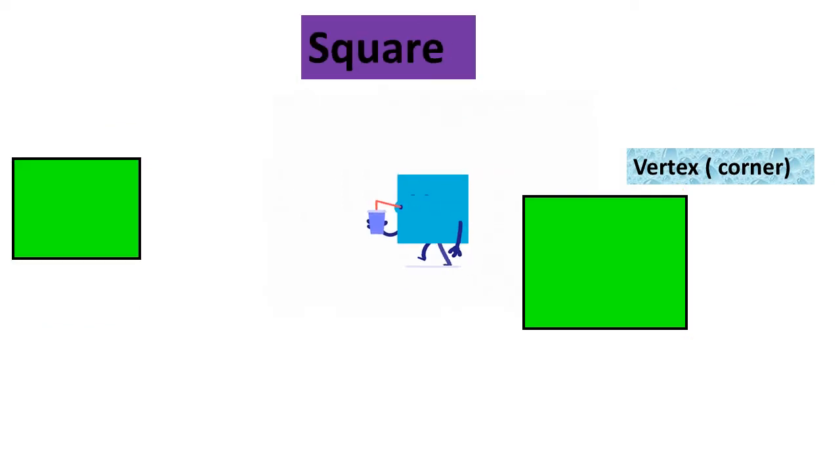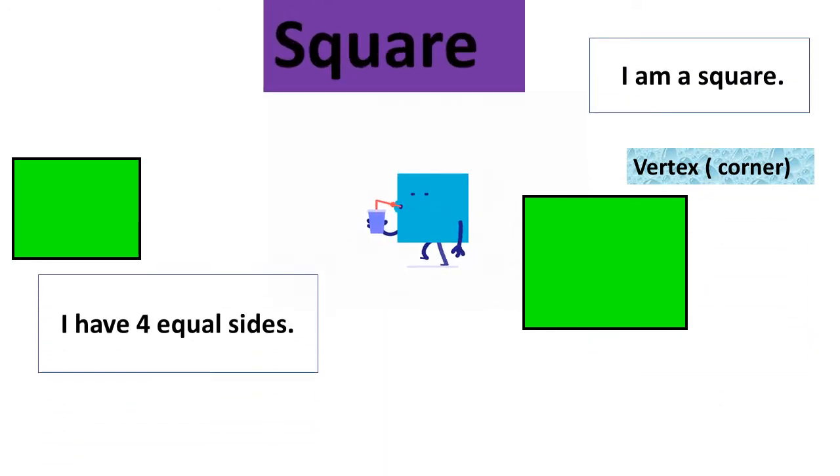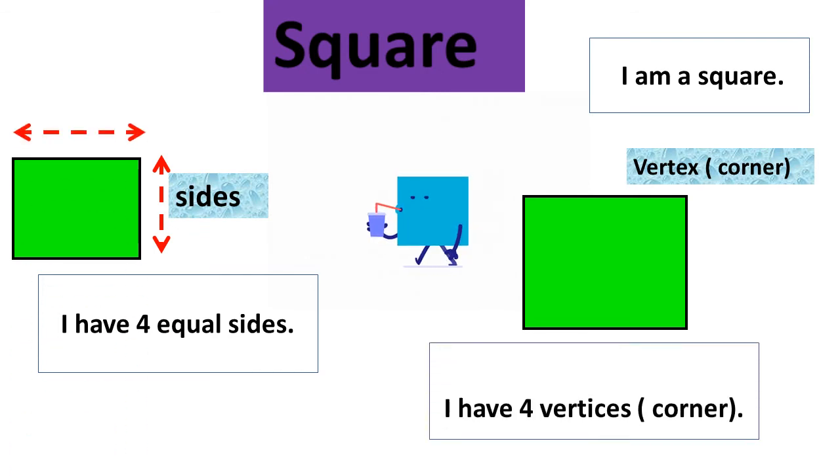This is a square. I am a square. A square has four equal sides. How many sides does a square have? Yes, I have four equal sides. All the sides of the square are equal. I have four vertices or corners.